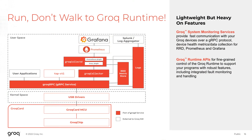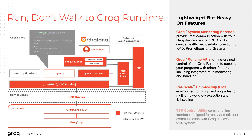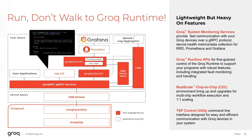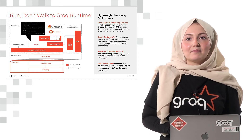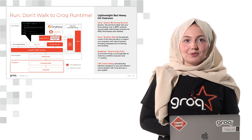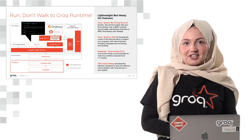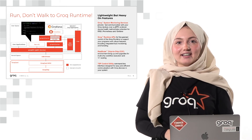The Grok runtime package also has runtime APIs that include easy, integrated fault monitoring and handling, among other features. Real-scale chip-to-chip environment bring-up and upgrades for multi-chip workflow execution, and the TSP control utility — another developer favorite — which is our command line interface designed to provide functional and performance validation with commands to directly interact with Grok chip. We have included many commands and are always adding more features with each release to ensure an efficient, deterministic, and dare I say fun experience.